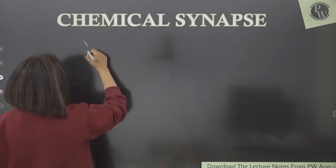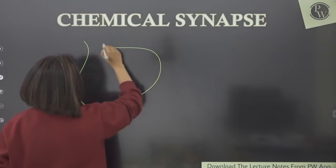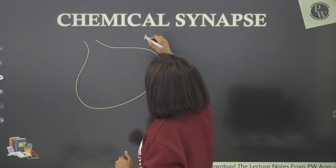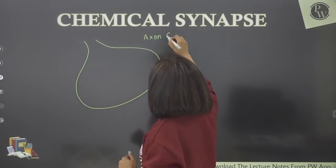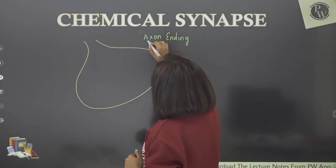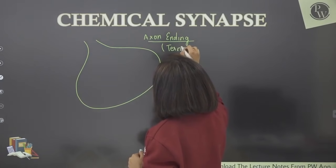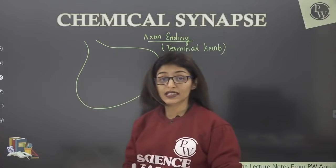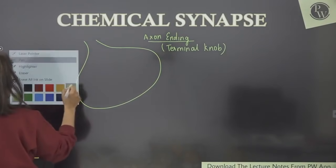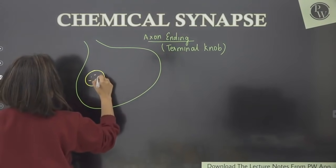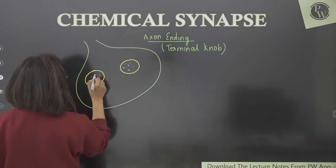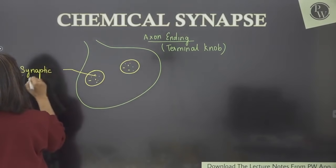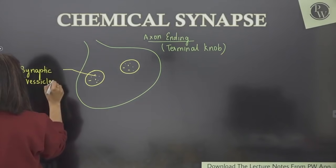Let's see the detailed structure of chemical synapse. This is the axon ending — the terminal knob, also called the synaptic knob, which stores neurotransmitters. These are the synaptic vesicles, and these synaptic vesicles store neurotransmitters.